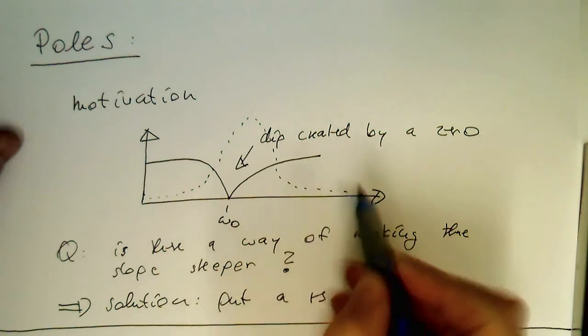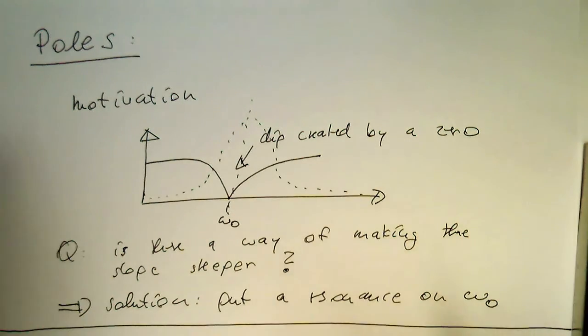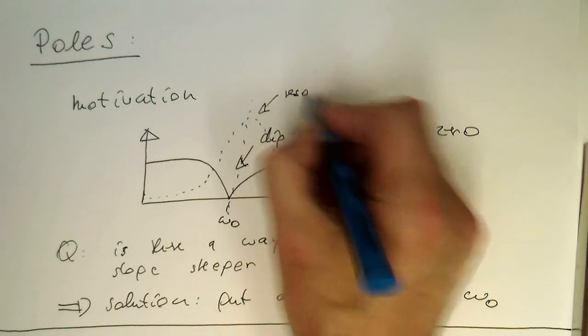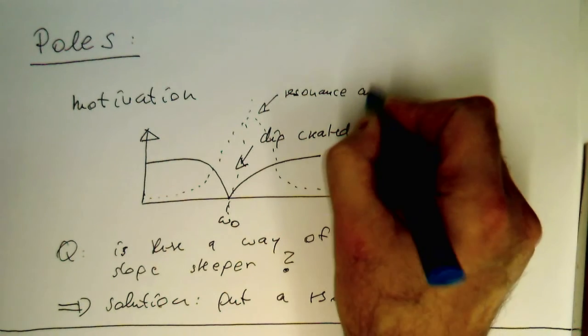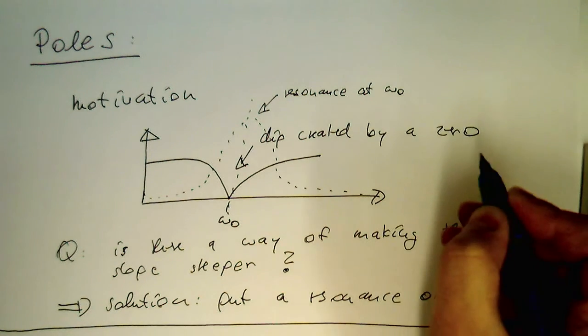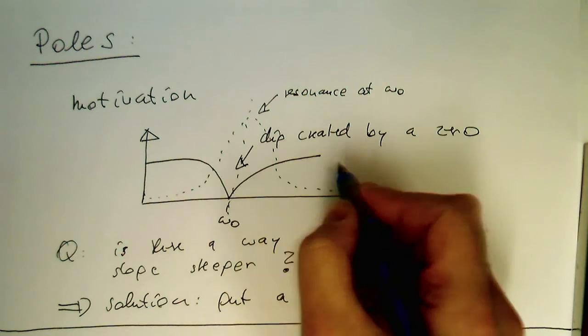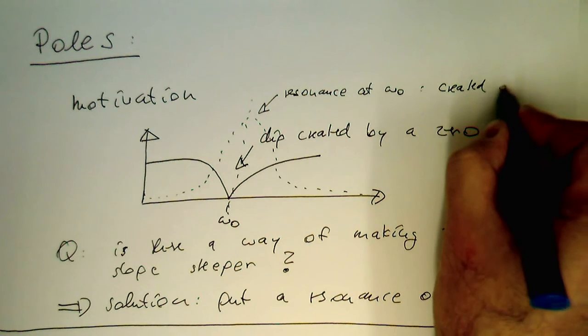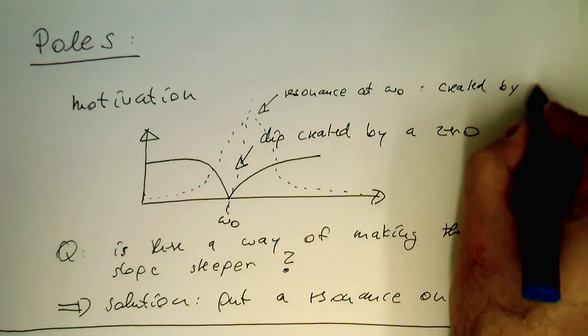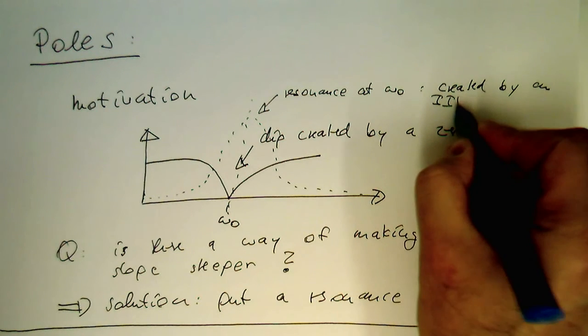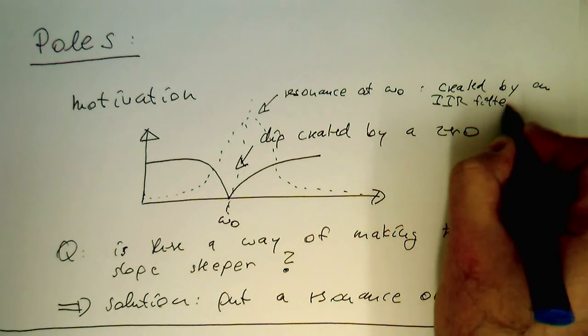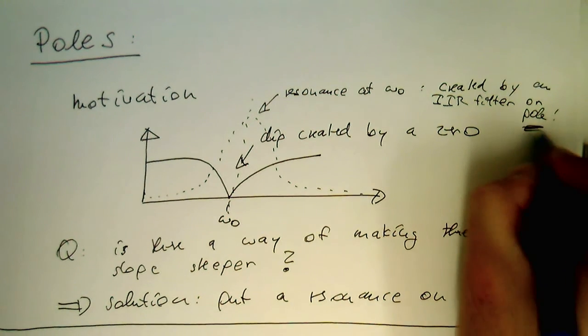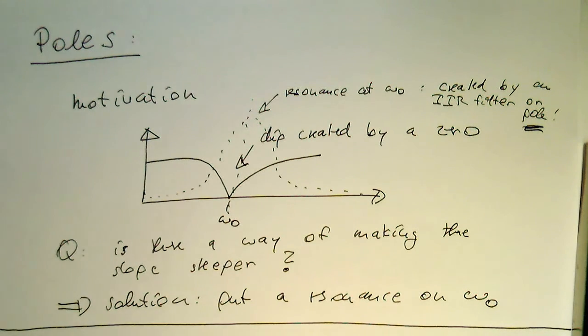So we hope that the resonance here, if we're putting the resonance at omega zero here, that this improves our response here. And the resonance at omega zero, this is created by an IIR filter or pole. So that's the next step, what we're going to do now.